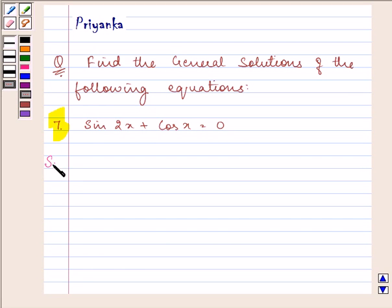Let us proceed with our solution. First of all, we need to factorize this equation and then find out the general solution. So, now here we can write sin 2x as 2 sin x cos x.